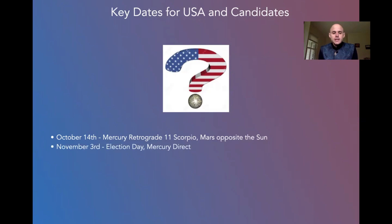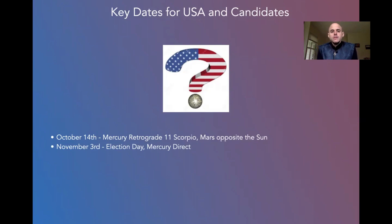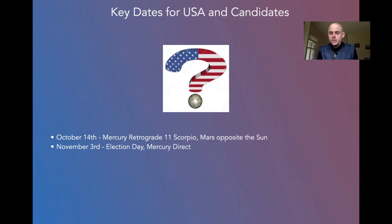November 3rd is election day. Guess what? Mercury goes direct. Mercury, the planet of communication and information — the polls and who are voting for — will change directions that day. That brings an extra mega dose — not a micro dose — of confusion and chaos on the day of the elections.